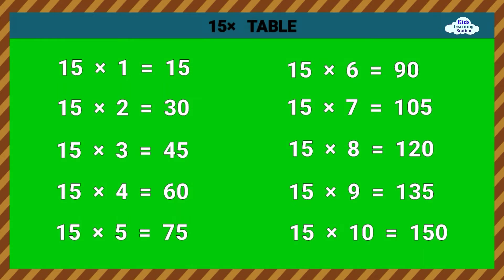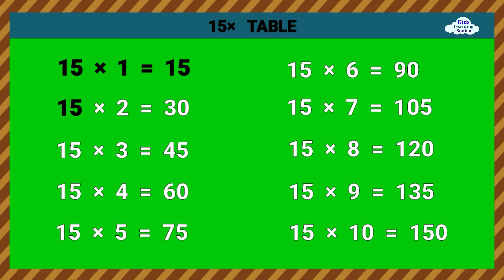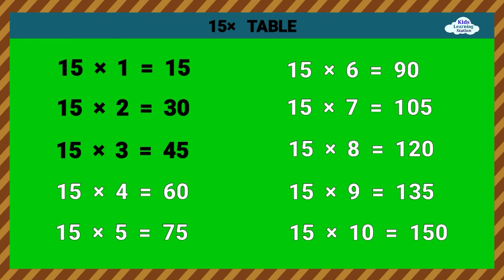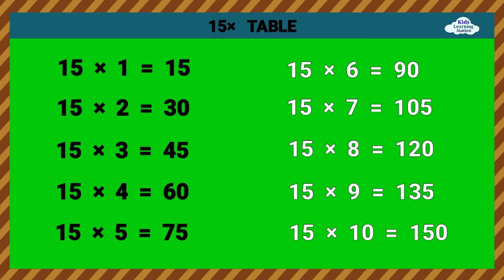15 times table. 15 times 1 equals 15. 15 times 2 equals 30. 15 times 3 equals 45. 15 times 4 equals 60. 15 times 5 equals 75.